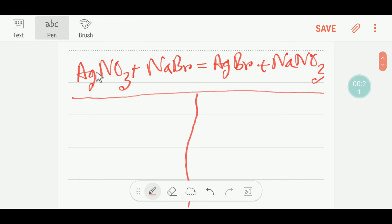This is the left-hand side or reactant side, this is the right-hand side or product side. On the left-hand side or reactant side, we have one silver, we have one nitrate NO3 - this is the nitrate radical.